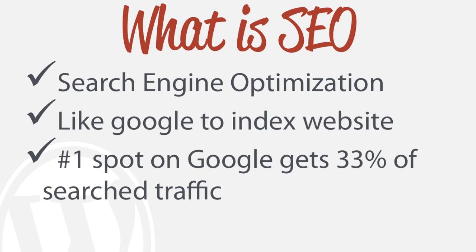There are different algorithms for different search engines, and most people primarily look at Google because it has the highest volume of traffic. Search engine optimization gives us different practices, tricks, and tips — all completely legal — that allow you to tell Google exactly what your website or article is about, so that users can find your website easier.